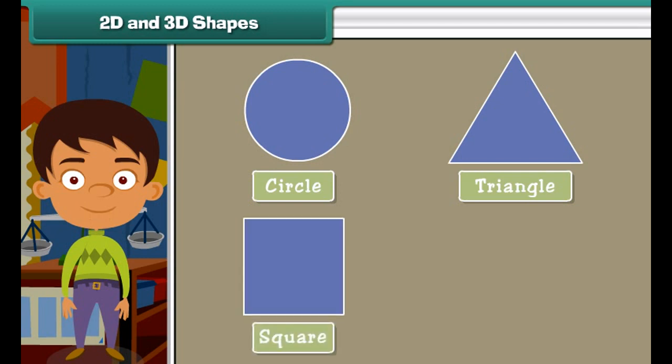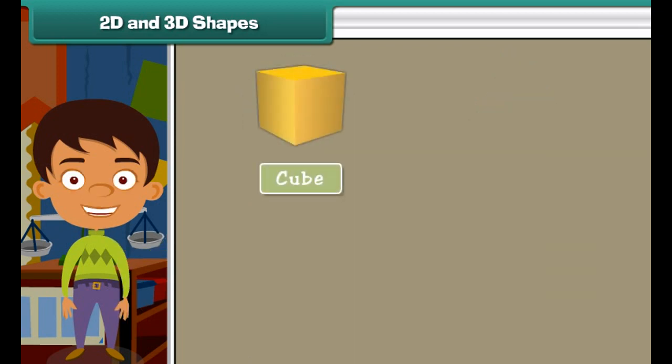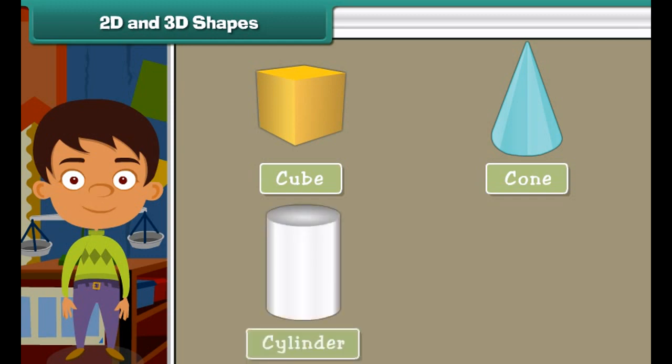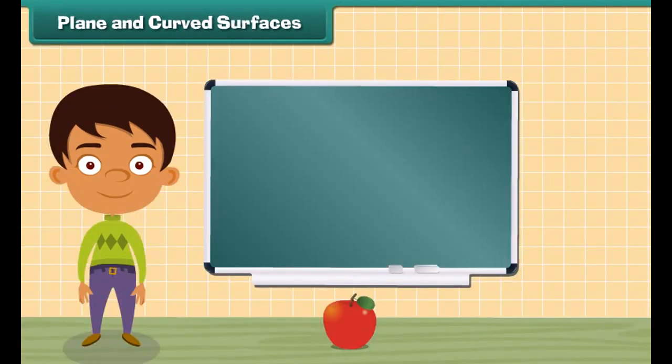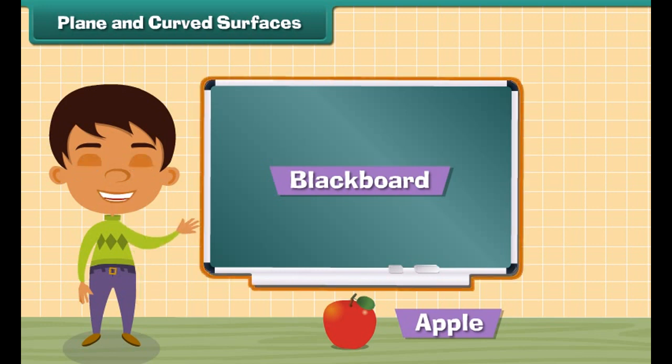2D and 3D shapes. Now let us talk about two-dimensional or 2D shapes. Some 2D shapes are circle, triangle, square, and rectangle. Some three-dimensional or 3D shapes are cube, cone, cylinder, and sphere.